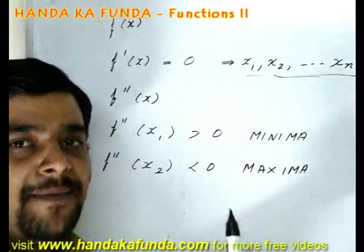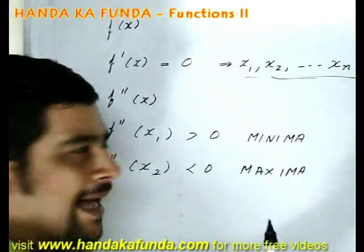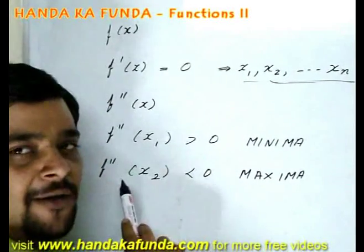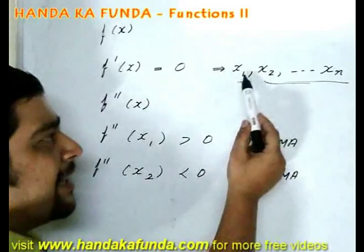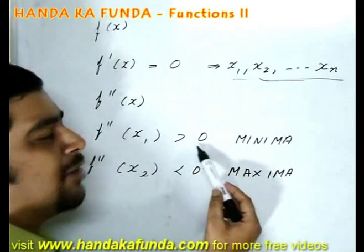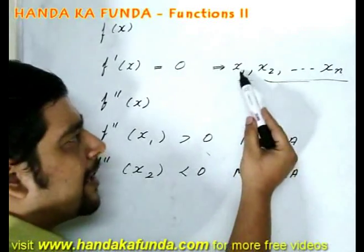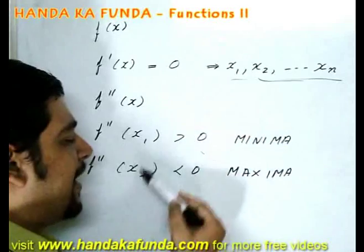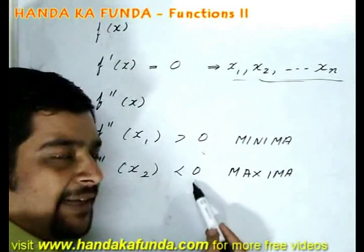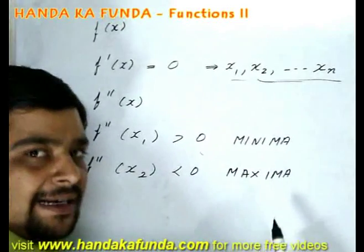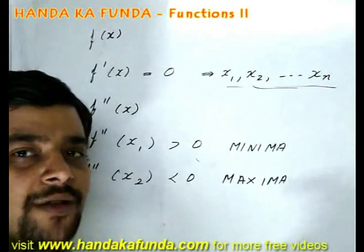How am I going to find that out whether it is a maxima or a minima? For that I will need to find out f double dash x, or double differential of the function. And then keep on putting the roots. Say I put in the root x1 and it comes out as a positive value. That means x1 is the point at which a minima occurs. When I put x2 it comes out as a negative value. That means x2 is the point at which the maxima occurs.